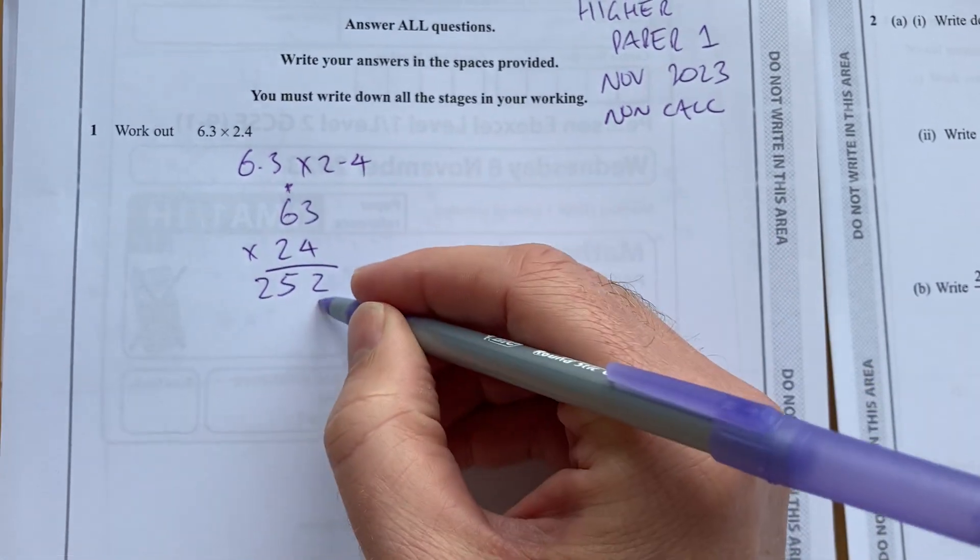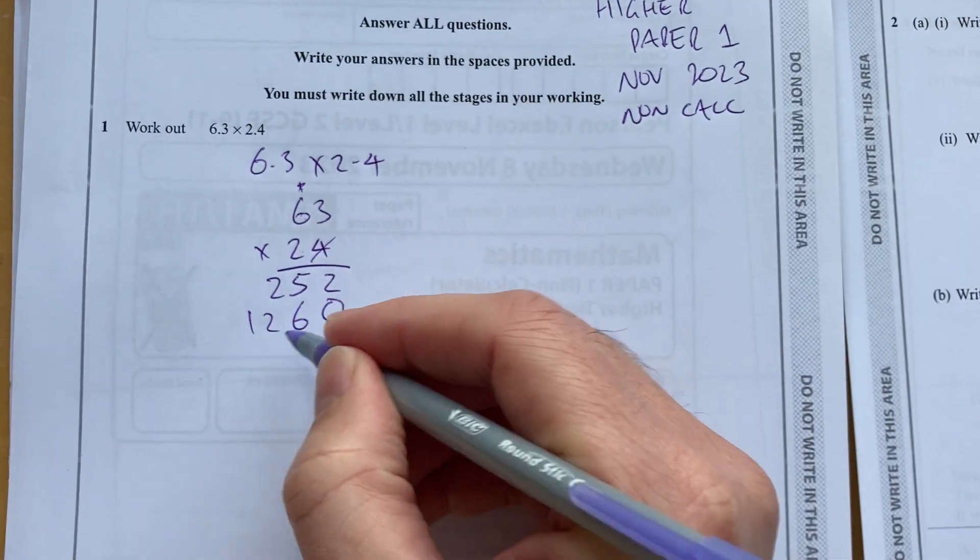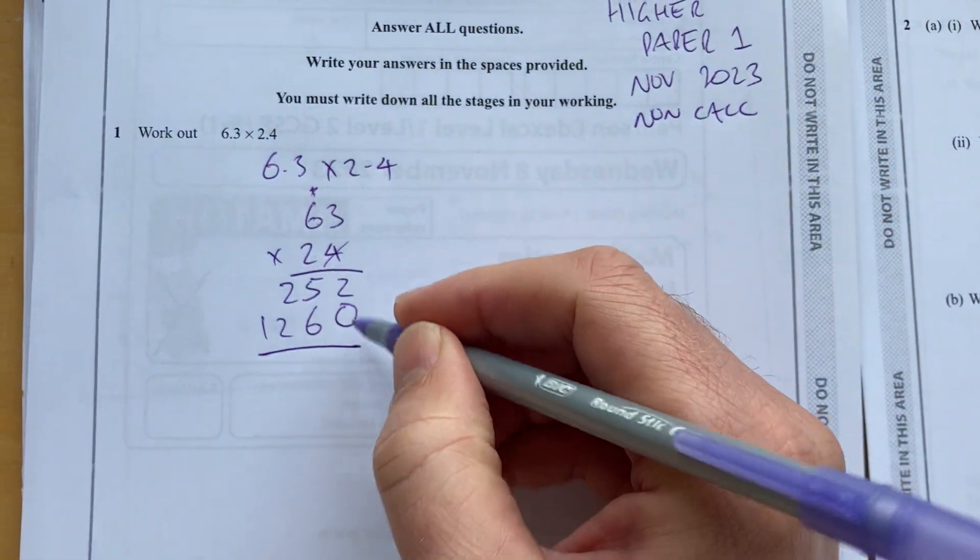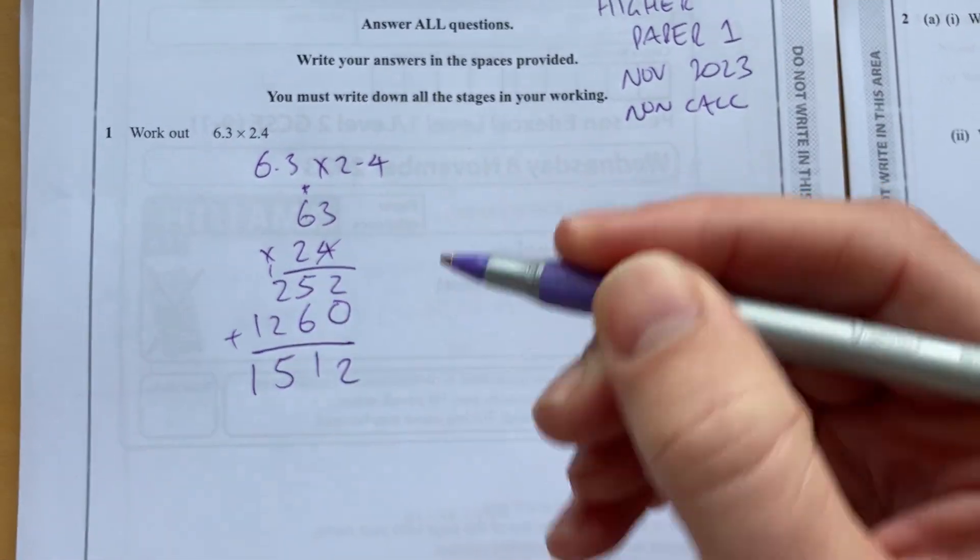6 times 4 is 24, plus that 1, 252. Put the 0. 2 times 3 is 6. 2 times 6 is 12. So then I have 2, 11, carry that 1, 5, bring that 1 down.